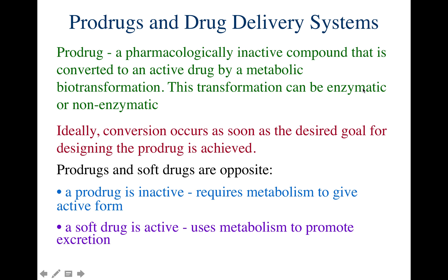Enzymatic transformation can occur through enzymes such as esterase and amidase enzymes. Non-enzymatic transformation happens through hydrolysis — for instance, in an acidic environment like the gastrointestinal tract. Ideally, the conversion of the intact prodrug should occur only once the desired goal is achieved. If you designed a prodrug to cross the blood-brain barrier, it must stay intact until it crosses that barrier and is in the central nervous system.